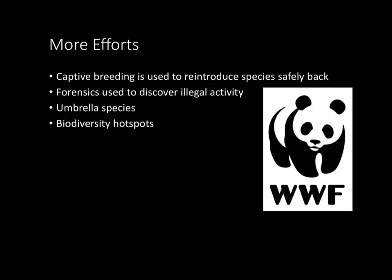There's also something known as forensics — similar to what you know from cop shows. In this case, forensics refers to scientists discovering illegal poaching and other types of activity in certain areas; they can use DNA to detect this and act accordingly. There's also an interesting subject known as an umbrella species. The panda bear, which represents the World Wildlife Fund, is a good example. An umbrella species is a flagship species — by supporting this animal very publicly, an organization can ensure that the rest of that animal's ecosystem benefits. By picking the panda, which everyone loves, that ensures the panda's entire ecosystem receives care, money, and resources.